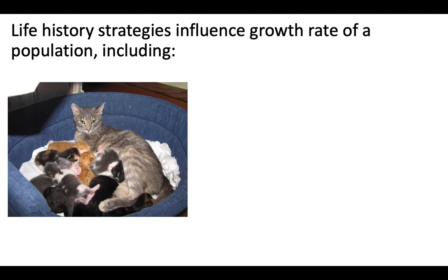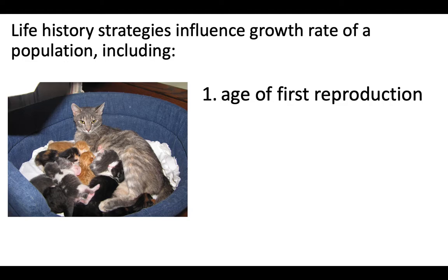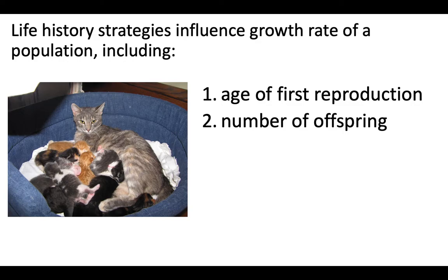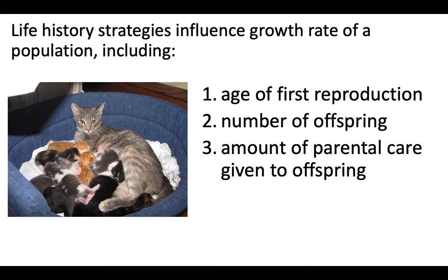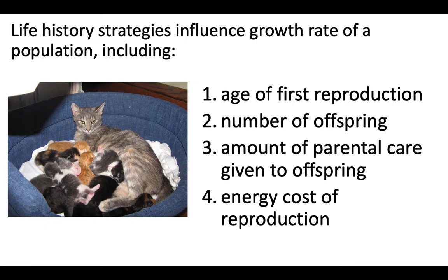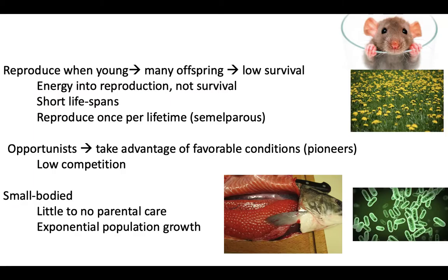Before we dig into R and K, life history strategies can influence population changes in several ways. They might change the age at which an organism first reproduces — reproducing young means more babies over a lifetime, while reproducing older means fewer. They also affect the number of offspring an individual has, the amount of parental care required for each offspring — humans give a lot, cats not as much — and how much energy it costs to reproduce.